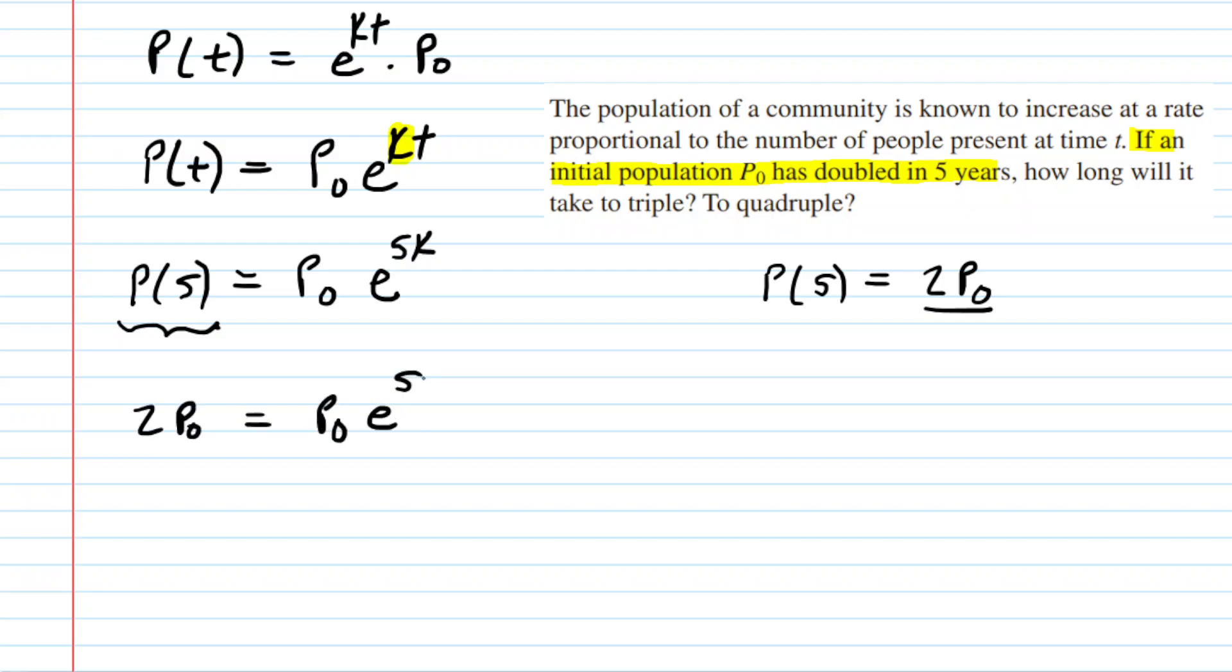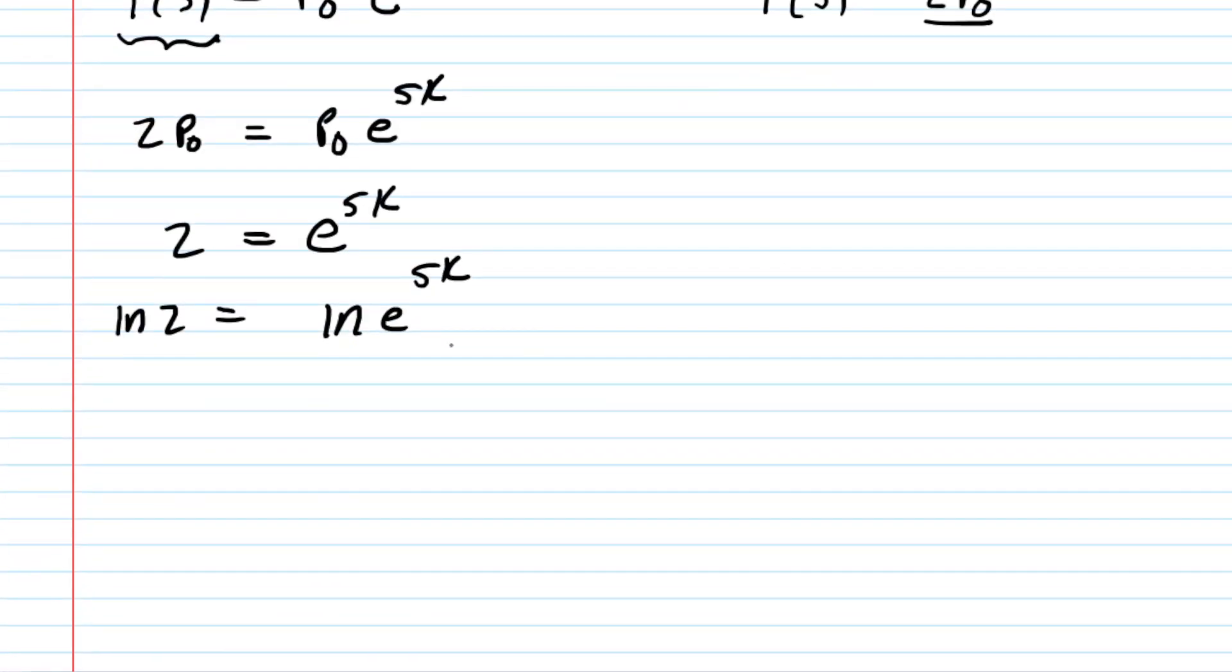Now look at that equation, and you'll notice P0 appears on both sides. So you could divide both sides by P0 to cancel it out. And now we're going to solve for k by taking the natural log of both sides. On the right-hand side, we can use some logarithm properties to bring that 5k down, which is multiplied by the natural log of e. Now the natural log of e is just one, so really you're just left with 5k on the right side. And then finally divide both sides by 5, and you have the value of k.